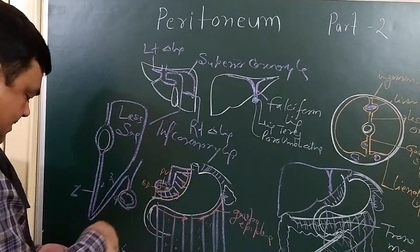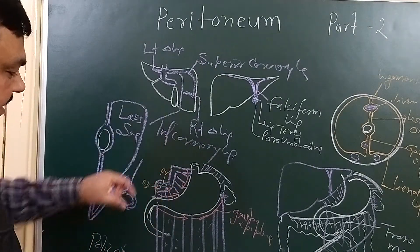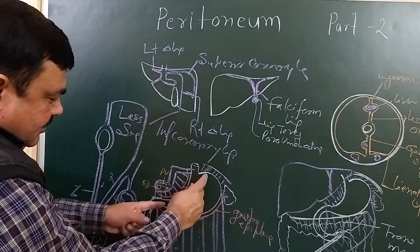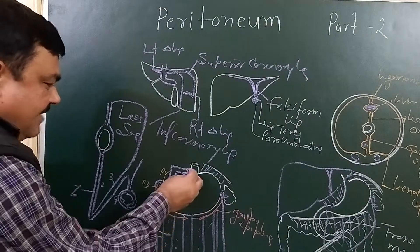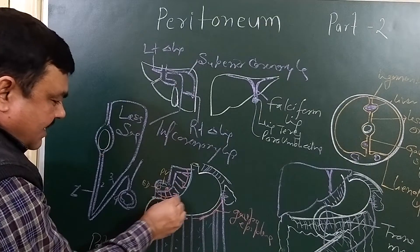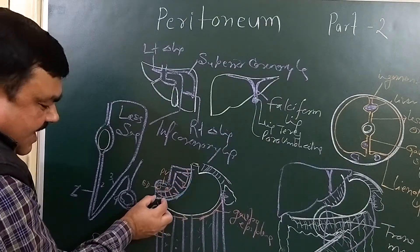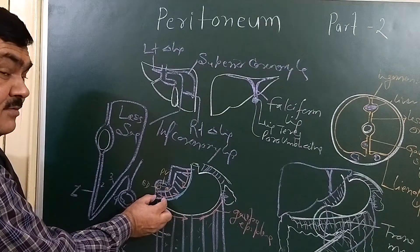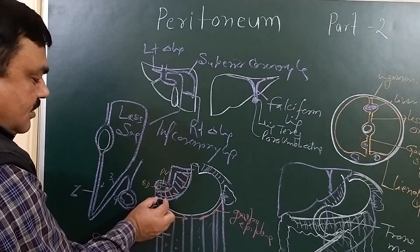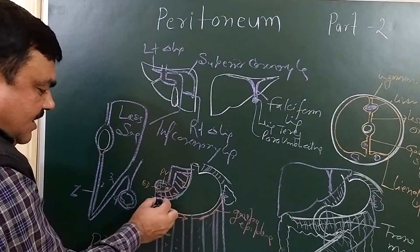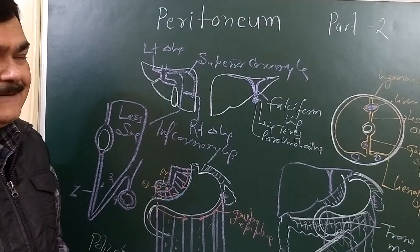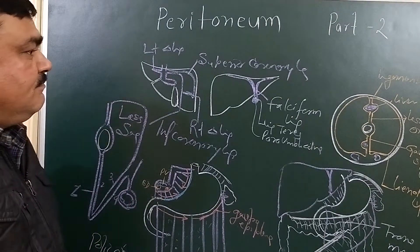The lesser omentum can be divided into two parts. The hepatogastric ligament runs from the liver to the lesser curvature of the stomach. The part which covers the first two centimeters of the duodenum is the hepatoduodenal ligament. So the lesser omentum is divided into the hepatogastric ligament and the hepatoduodenal ligament. This concludes part two. Thank you.